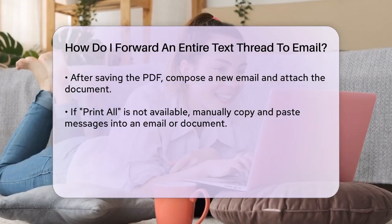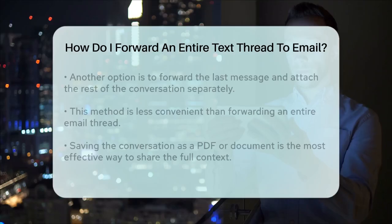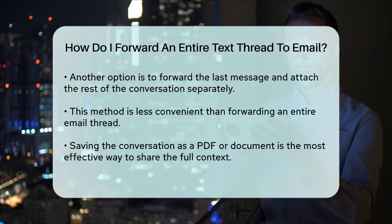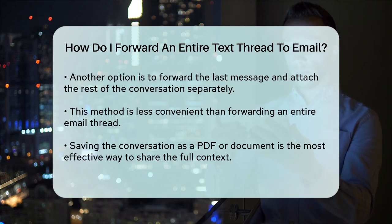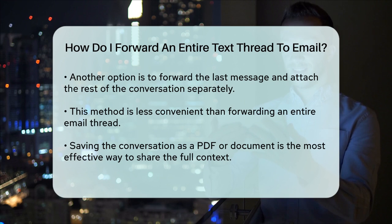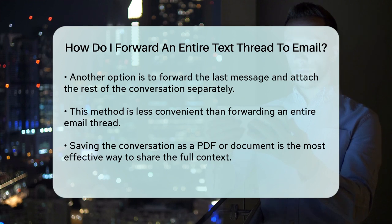Another approach, though less convenient, is to forward the last message in the thread and then attach the rest of the conversation as a document or PDF. However, this method is not as seamless as forwarding an entire email thread in Gmail. In summary, while you can't directly forward an entire text message thread to an email, saving the conversation as a PDF or document and then attaching it to an email is your best bet. This method ensures that you can share the full context of your text conversation with others.